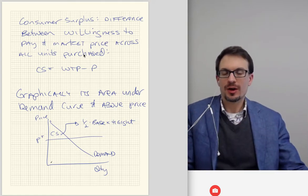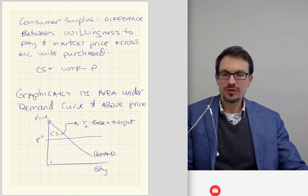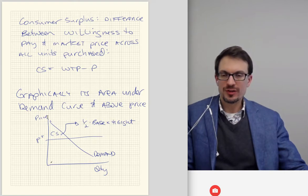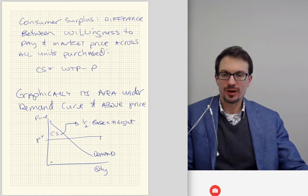We'd aggregate this up across all consumers, and that would give us graphically the area under a demand curve. So graphically, consumer surplus is the area under the demand curve and above the market price.